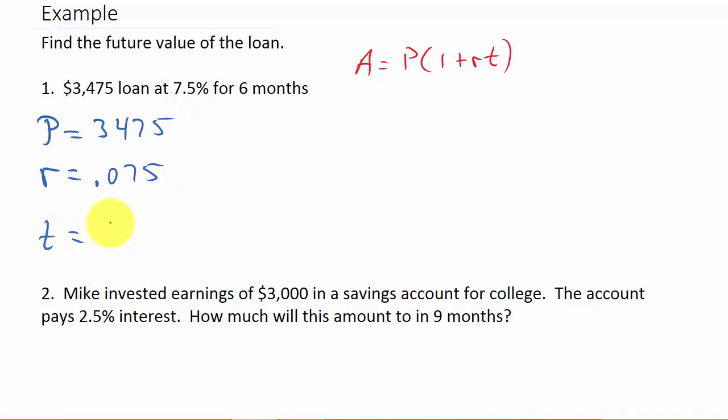And then T is the number of years. So if we write months, that's six months, and how many months are in a year? 12. So that would be 6 over 12. And yes, you can reduce it to 1 half. It doesn't matter.